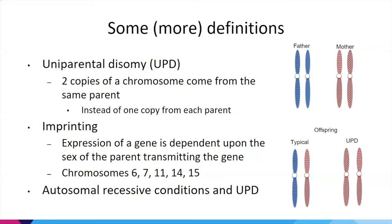Imprinting means that gene expression depends on the sex of the transmitting parent — a gene may only be active if inherited from the mother versus the father. If a mosaic embryo for one of these chromosomes is transferred, UPD can cause effects for the developing pregnancy. There's also a possibility that UPD could increase the risk of a recessive condition if one of the biological parents is a carrier of a pathogenic variant in the implicated chromosome.